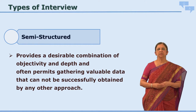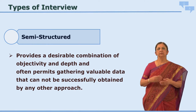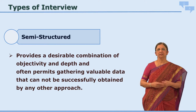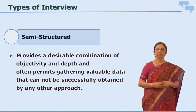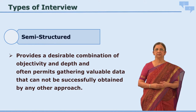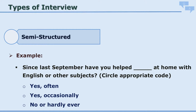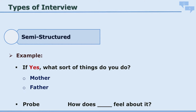The semi-structured interview provides both objectivity and in-depth understanding of the reasons or thought processes behind responses. For example, a semi-structured question might be: 'Since last September, have you helped your child at home with English or other subjects?' Answers could be: yes often, yes occasionally, no, or hardly ever. Then the interviewer probes further: 'If yes, what sort of things do you do?' — asked to both mother and father.